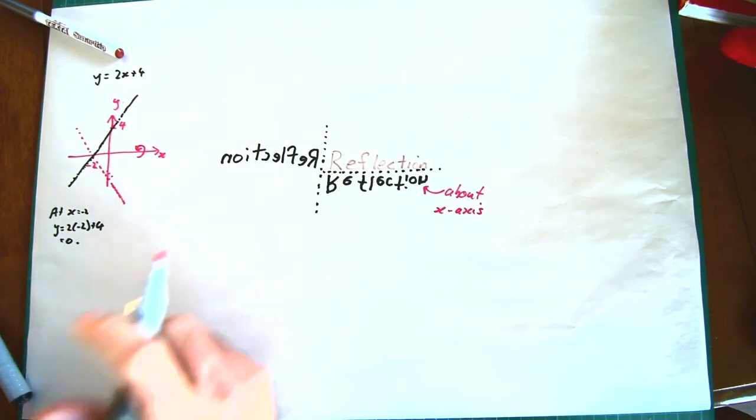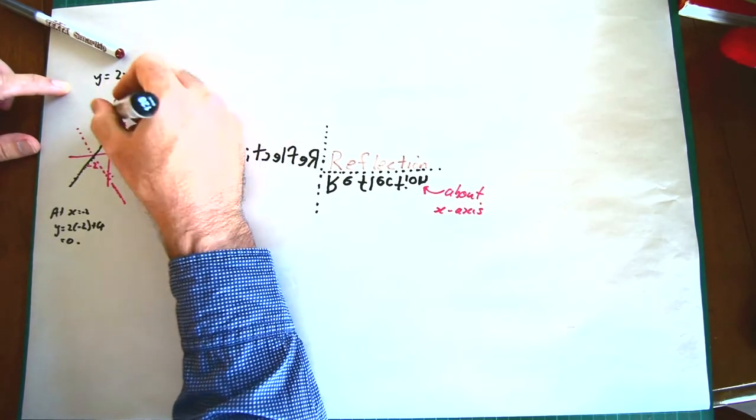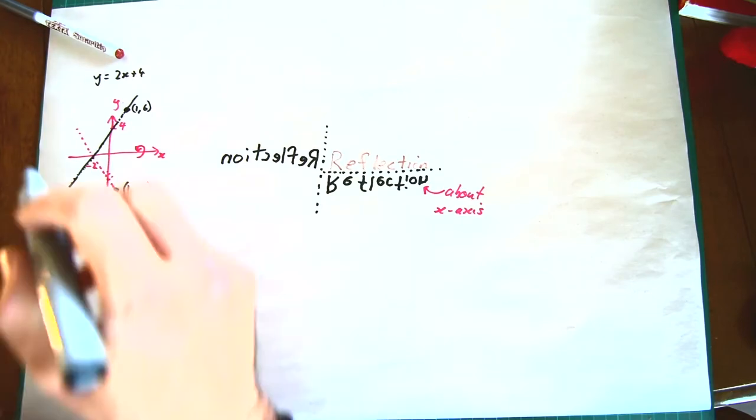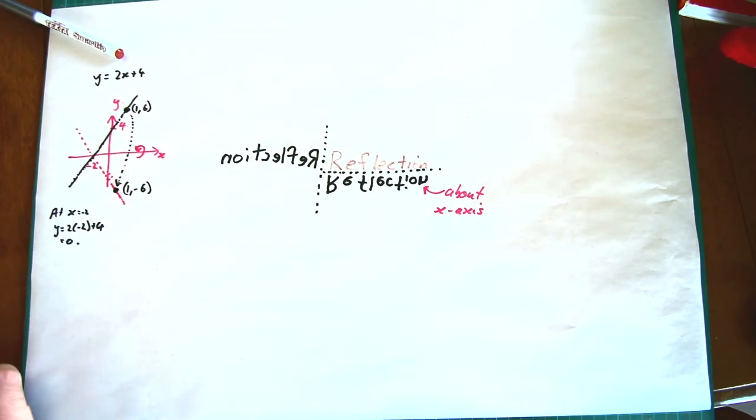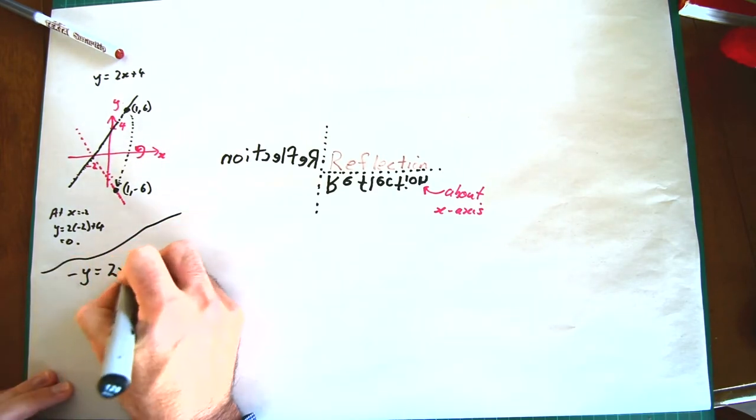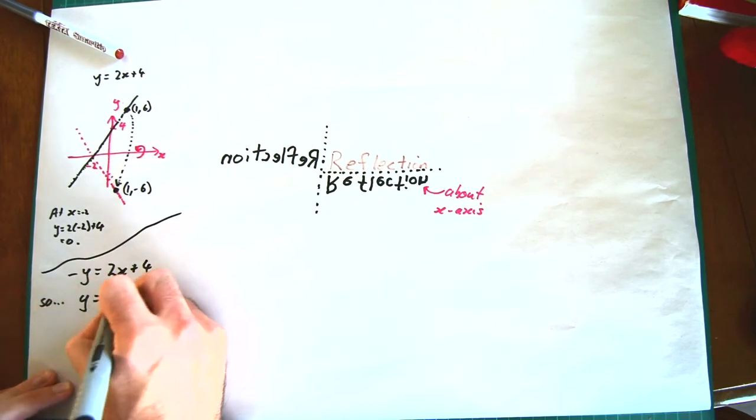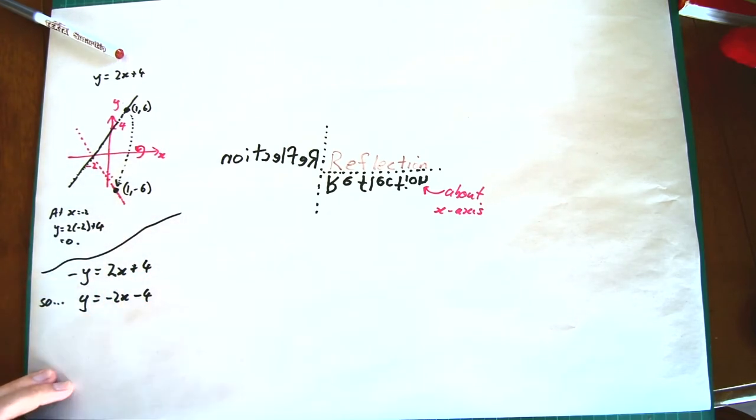We want all our positive y values to become negative and we want all our negative y values to become positive. We can achieve this by replacing y with a negative y. Let's look at the equation negative y equals 2x plus 4. So we multiply both sides by minus 1, and we get y equals negative 2x minus 4.